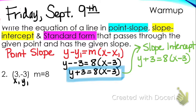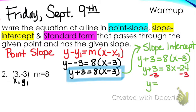So when you distribute the 8, you get y plus 3 equals 8x minus 24. Subtract 3 from both sides. Your final equation for slope-intercept will be y equals 8x minus 27. This is your slope-intercept.